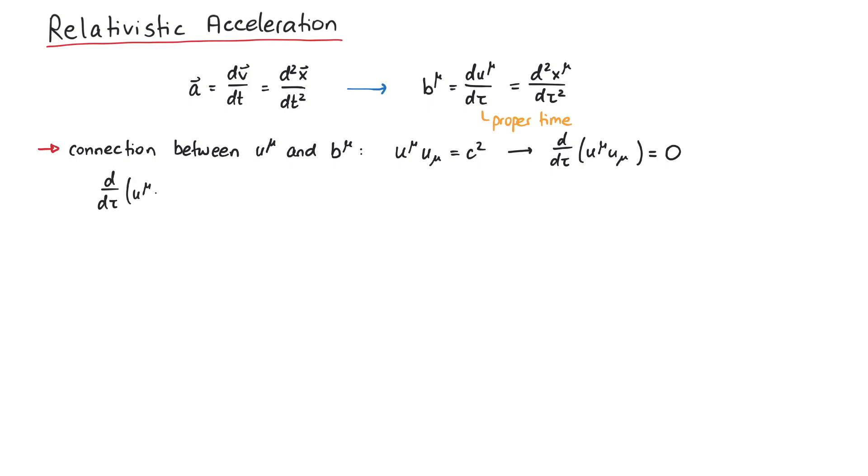However, we can also use the product rule, which results in 2 times b mu u mu. This must be zero, which means that in Minkowski space, 4-velocity and 4-acceleration are always orthogonal to each other.